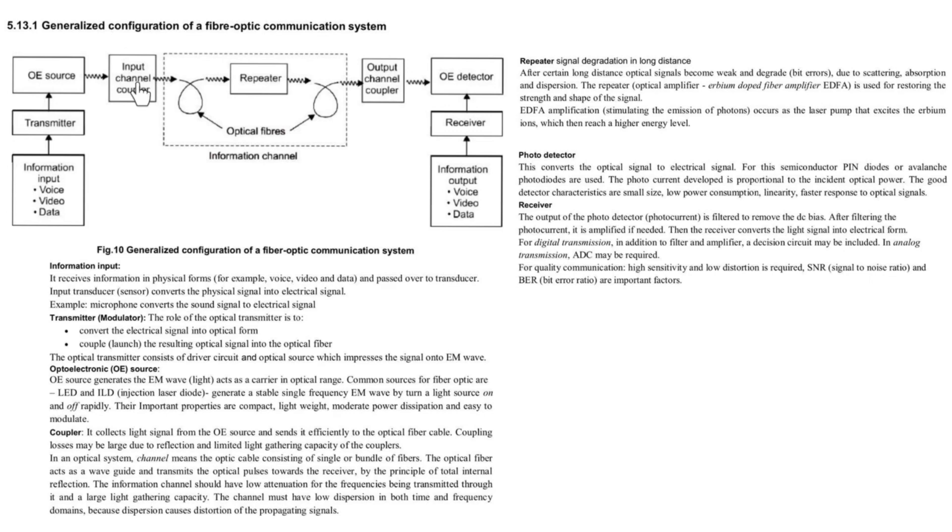In optical fiber channel means the optical cable consisting of a single or bundle of fibers. The optical fiber act as waveguide and transmit the optical pulses towards the receiver. In optical fiber, the signal is transmitted by the principle of total internal reflection. The information channel should have low attenuation for the frequency being transmitted and also it should have large light gathering capacity. The channel must also have low dissipation in both time as well as frequency domain because dissipation will cause distortion of propagating signal.